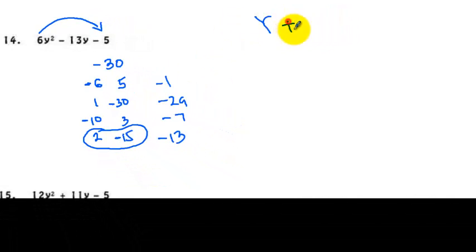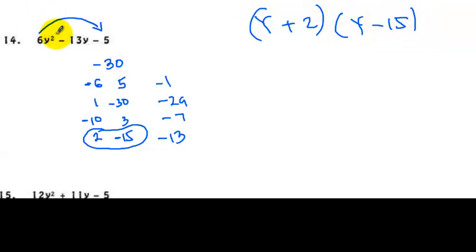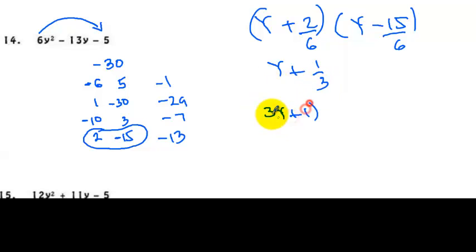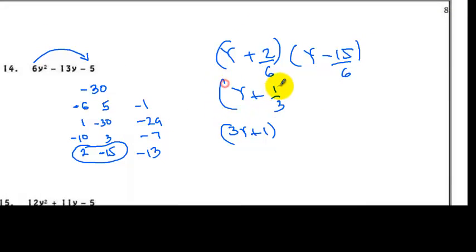Our initial answer will be y plus 2, y minus 15. But whatever value of a we have, we use it to divide the second term of each factor. So 2 over 6 is 1 third. Make sure you simplify the fraction. Since this is still a fraction, we slide 3 beside y, giving 3y plus 1 as one of the factors. For the other factor, 15 over 6 — we need to simplify 15 over 6 in lowest terms.